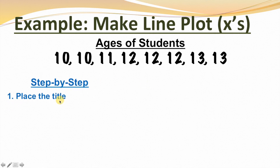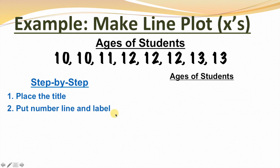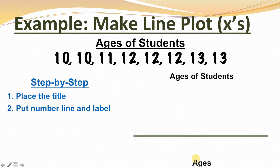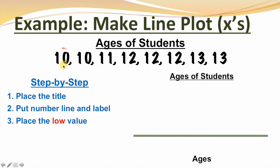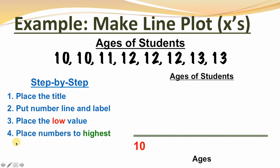Step 1, place the title — ages of students. Step 2, put number line and label. We'll draw a number line and underneath put a label for what each x will represent. Our data talks about ages of students, so we'll just write ages. Step 3, place the low value. Since our data is organized from least to greatest, our lowest value is 10, so we'll write it on our number line. Step 4, place the numbers to the highest. Our highest number is 13, so we're going to go from 10 all the way to 13.